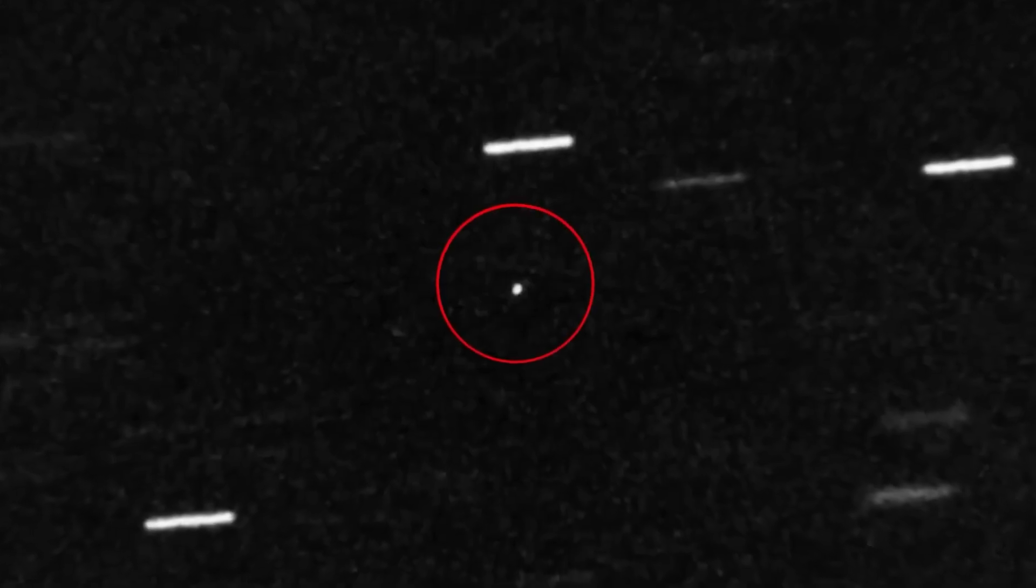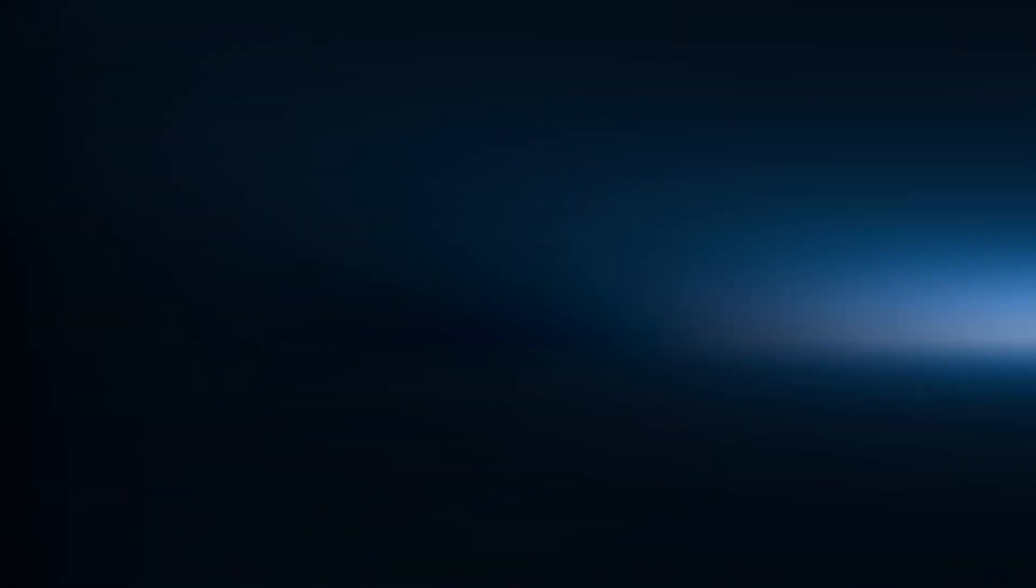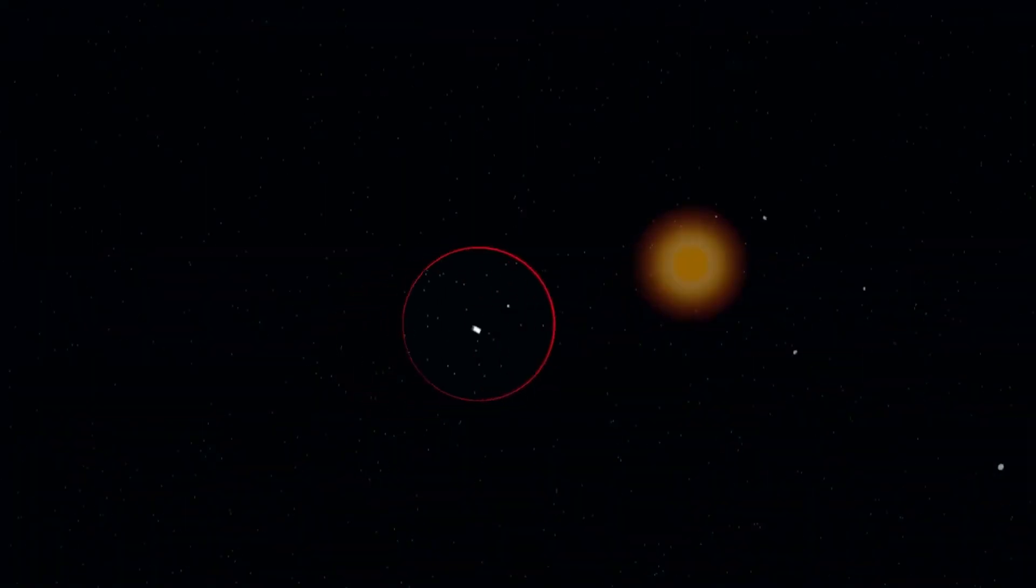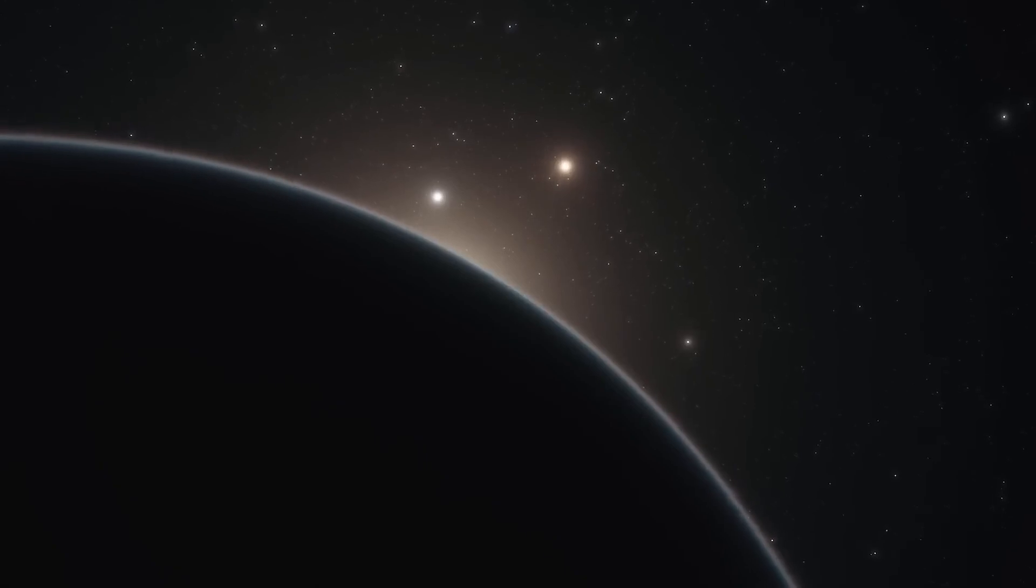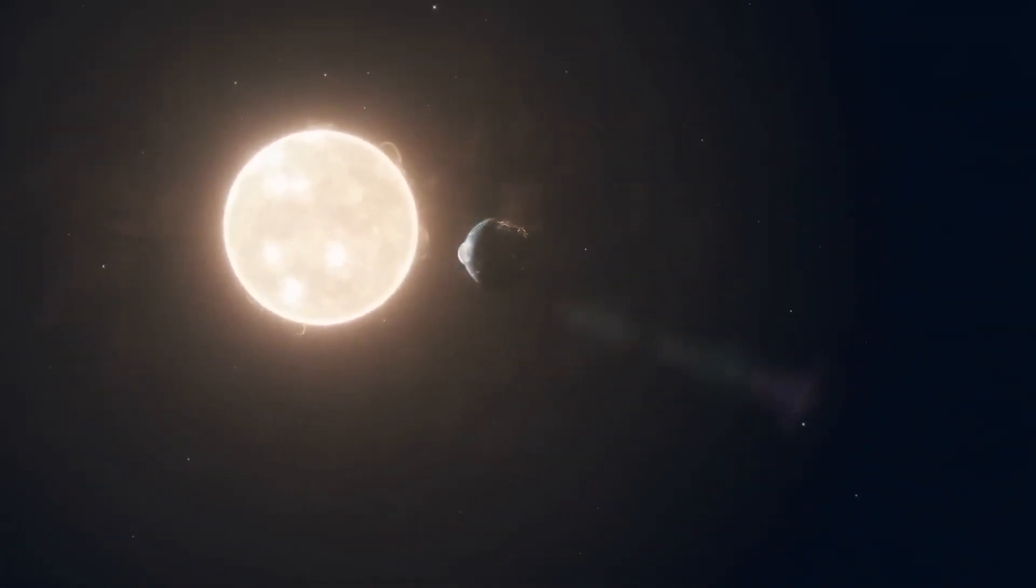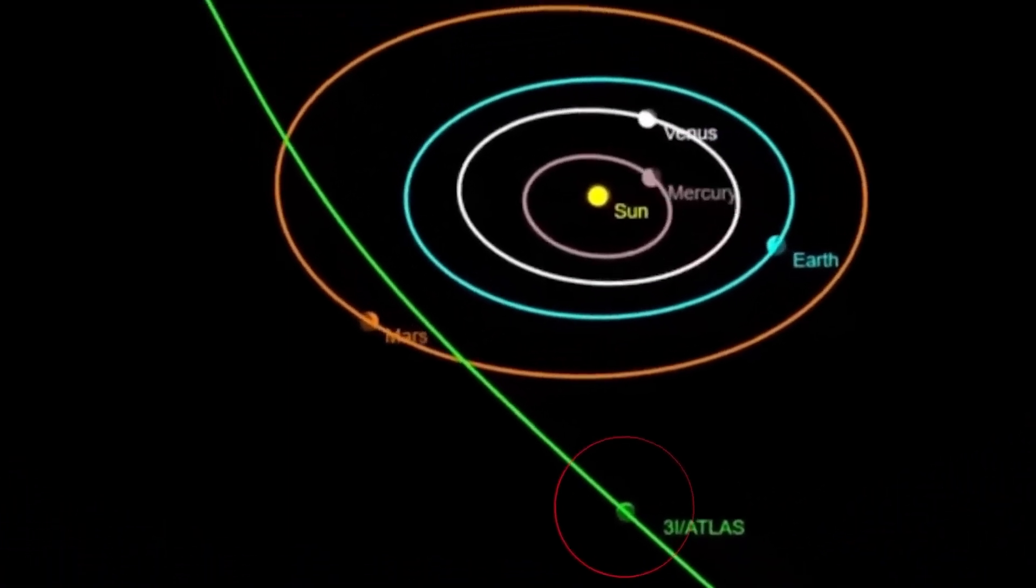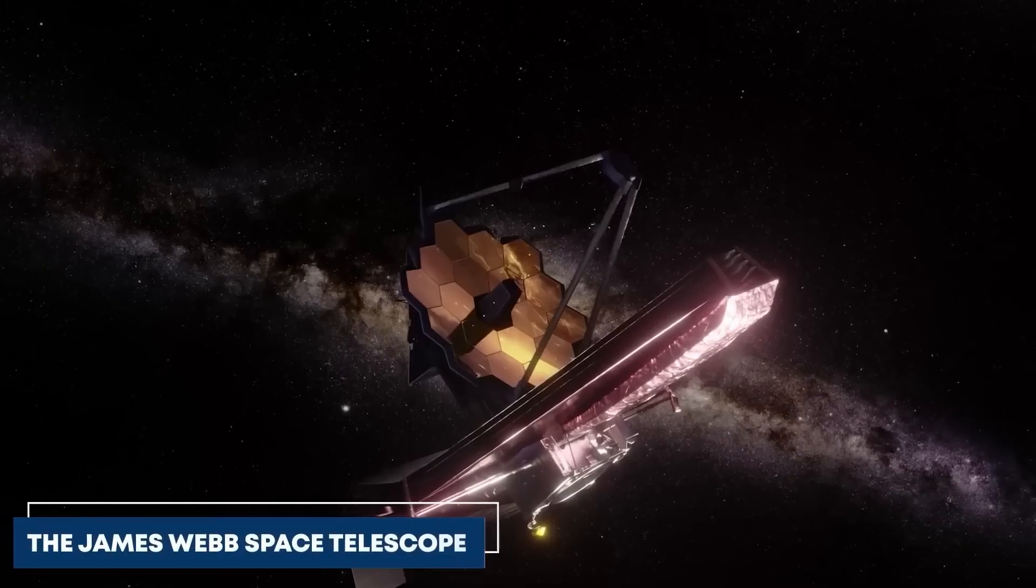Still, the questions refuse to vanish. Avi Loeb has continued pointing at the bigger picture: the improbable geometry of the orbit, the steady brightness, and the fact that this path takes 3i Atlas near two major planets in quick sequence. Each anomaly could be explained away, but stacking them together challenges the idea that chance is doing all the work. When does coincidence start to look like intention? That is where the debate turns from chemistry and physics to probability and interpretation.